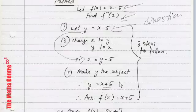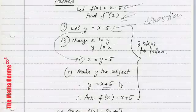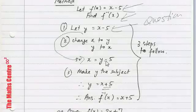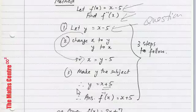So, three steps. First, to summarize, first step, let y equals to x minus 5. This follows the question that is given. And second step is to change your y to x and your x to y. And the last step is to make y the subject. And don't forget to write your answer as f inverse x equals to x plus 5. Let's look at a second example.